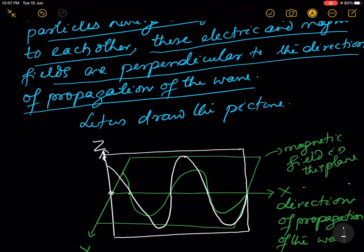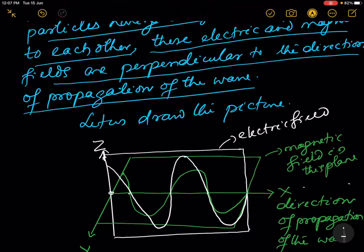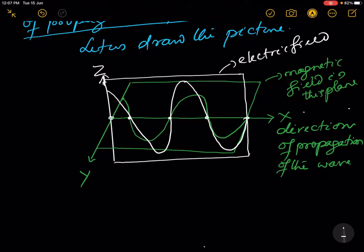The white line is the wave for the electric field, and the green line is the wave for the magnetic field. The z-axis is perpendicular to the y-axis, the y-axis is perpendicular to the x-axis, and the x-axis is perpendicular to the z-axis.